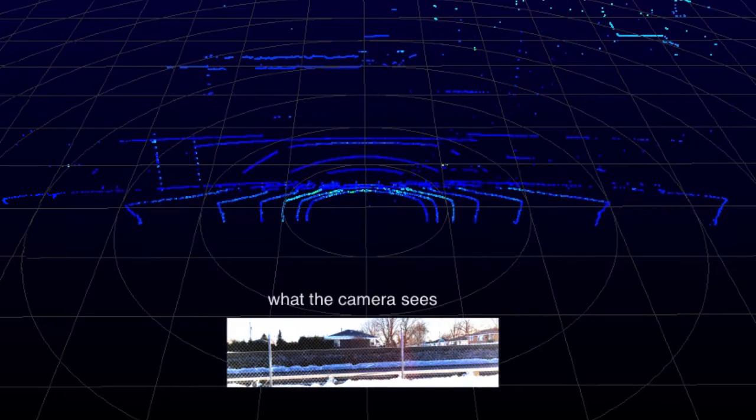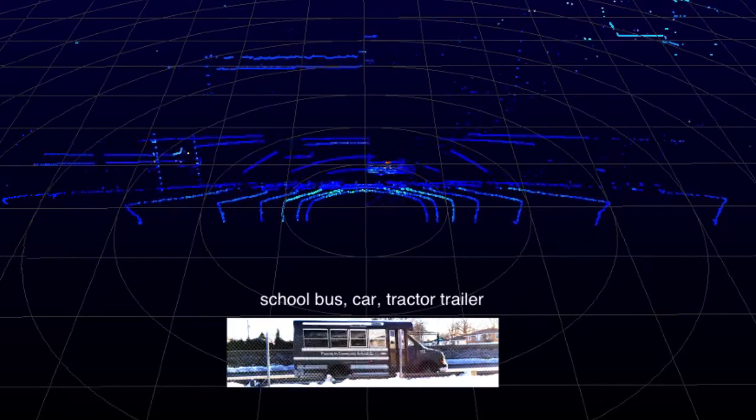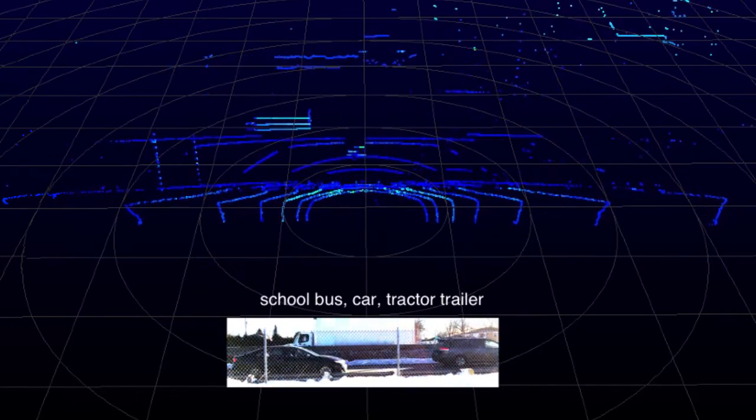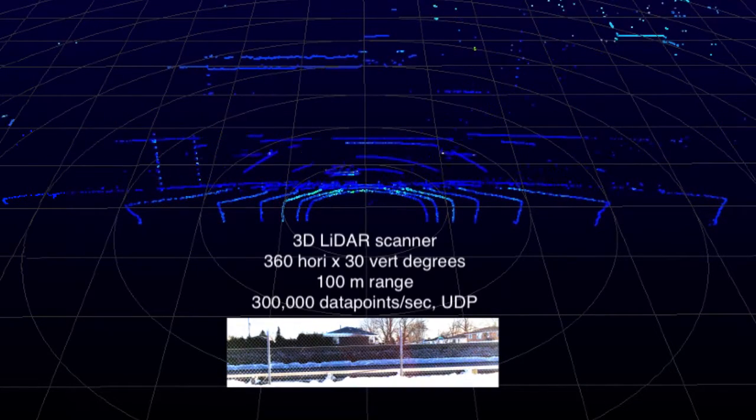In this short example, a school bus, a dark colored car, and a tractor trailer pass in front of the VLP 16 and camera in less than two seconds. Each is recognizable in the VPL scan lines.